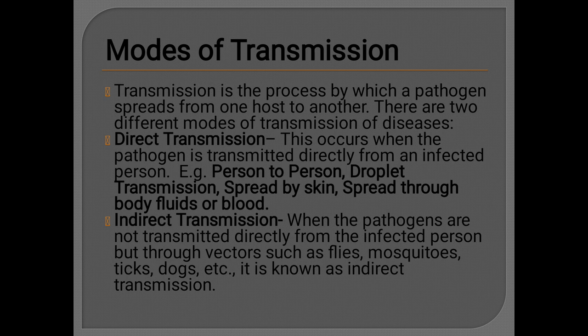Modes of transmission of viruses in animals: the process by which a pathogen spreads from one host to another is called transmission. Two different types of transmission take place — direct transmission and indirect transmission. Direct transmission examples include person-to-person droplet transmission, spread by skin contact, or spread through body fluids or blood. Indirect transmission occurs when pathogens are not transmitted directly from the infected person but through vectors such as flies, mosquitoes, ticks, and dogs.